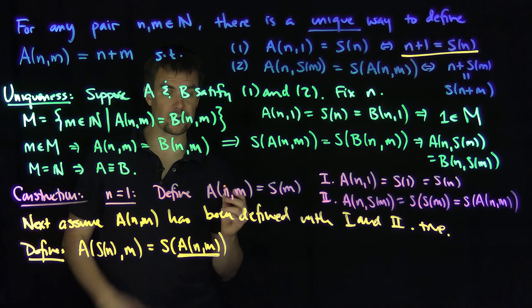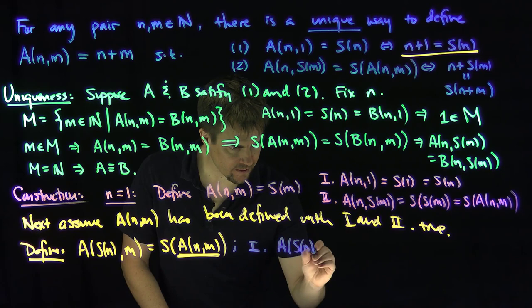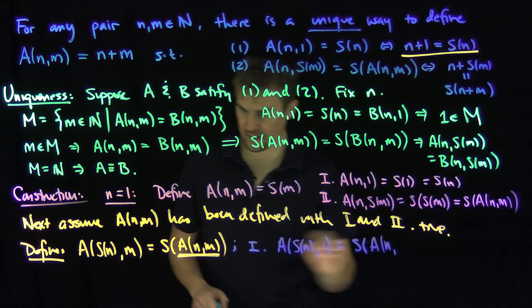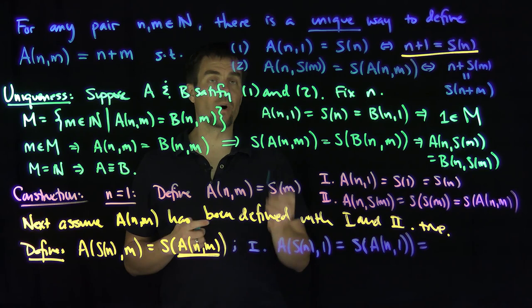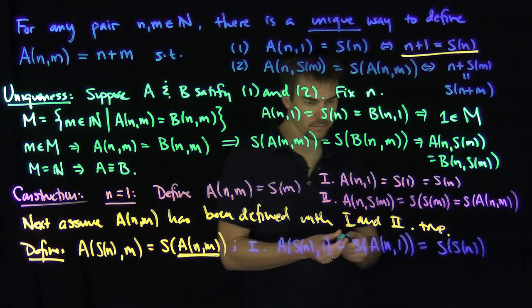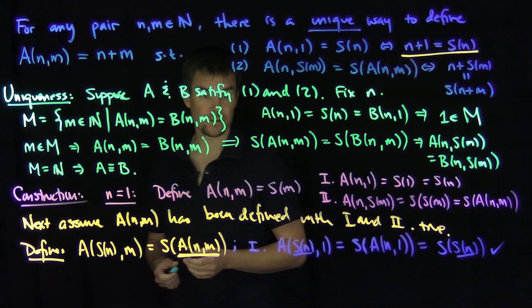Let's verify this satisfies both conditions. For property one, we look at A(S(n), 1). By definition this is S(A(n,1)). We know A(n,1) equals S(n), so this is S(S(n)). And since S(n) is the predecessor here, A(S(n), 1) equals the successor of S(n), so property one is satisfied.